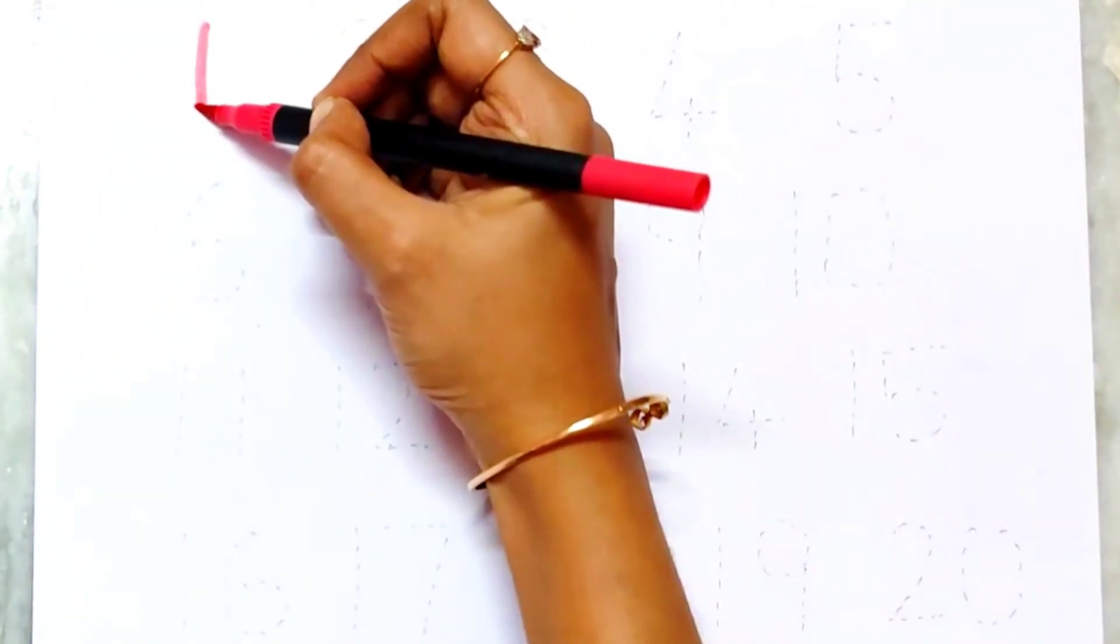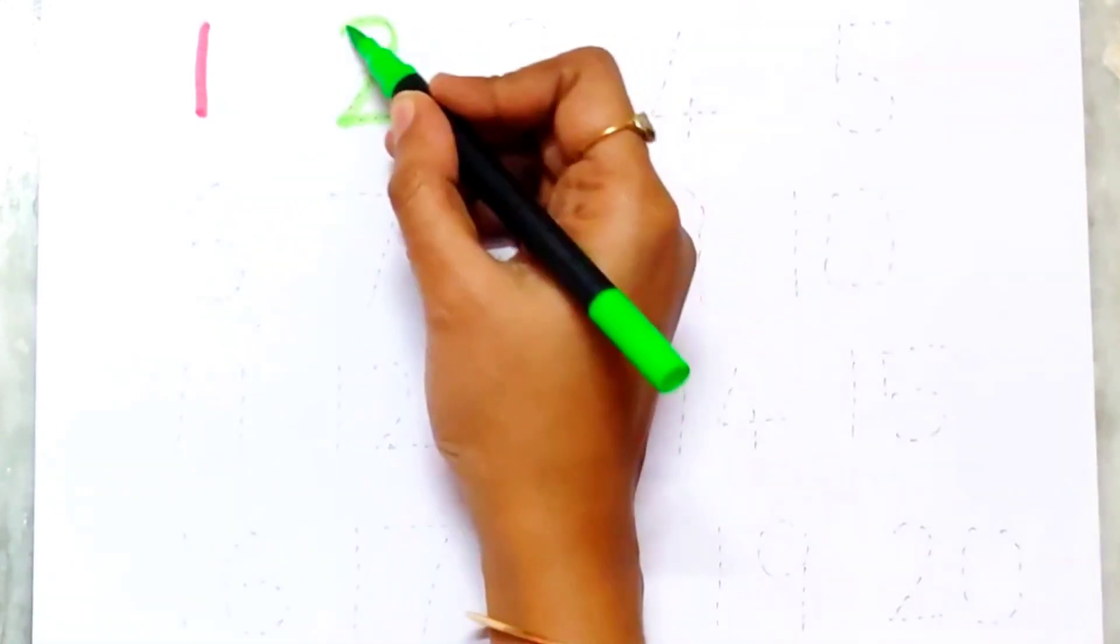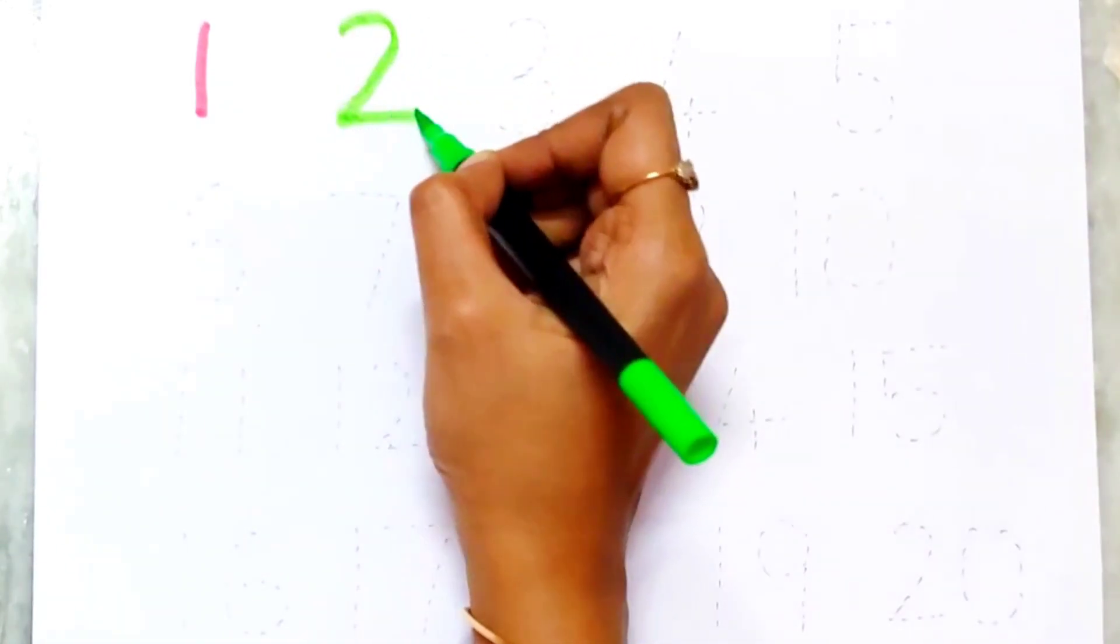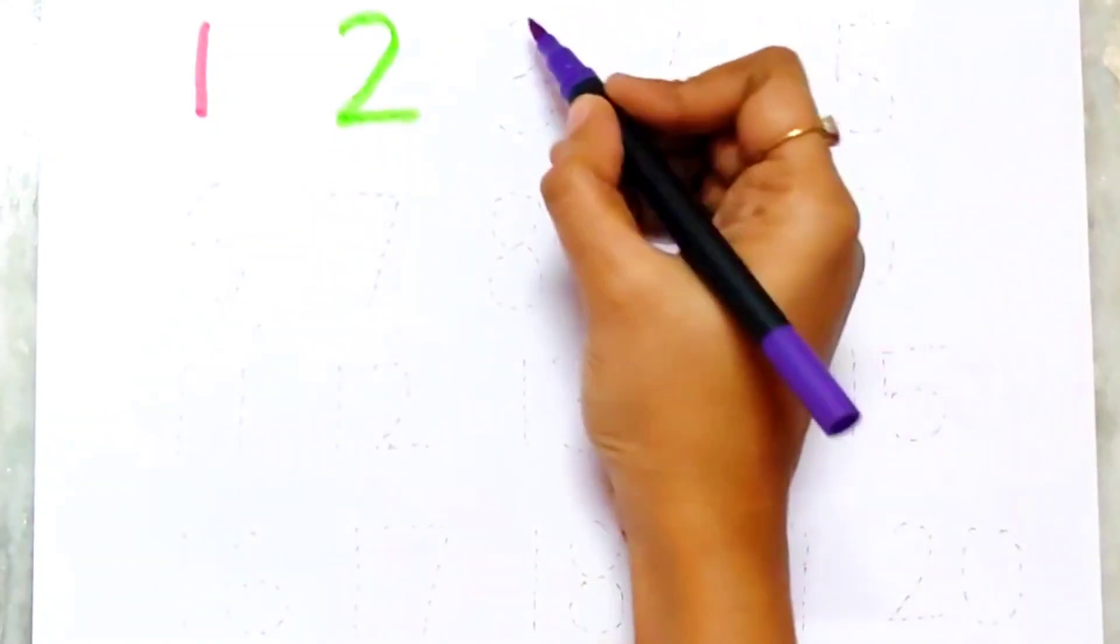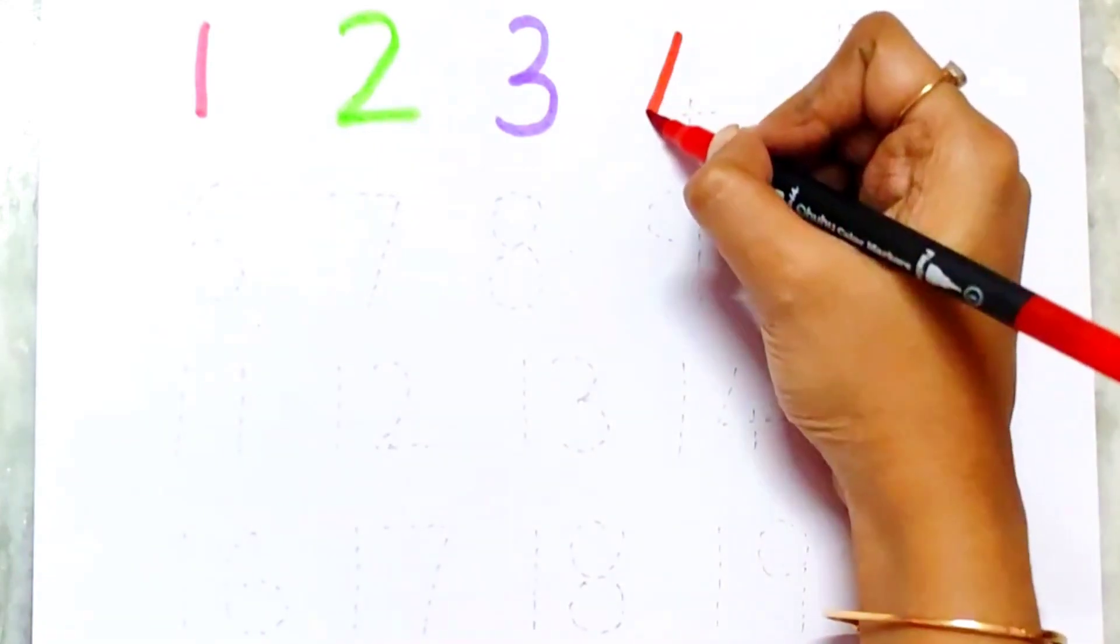Now let's learn to count the numbers. 1. This is 2. This is 3.